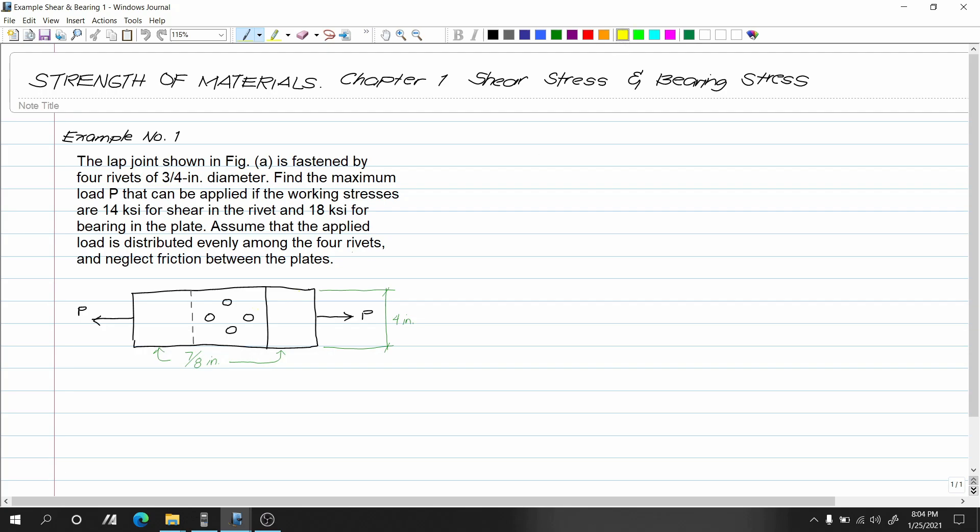So let's add our force P here. I first noticed that we neglect the friction between plates, and the applied load P is distributed evenly among the four rivets. We have shear stress and bearing stress. We need to solve for the maximum load P, just like example number 3 in normal stress.